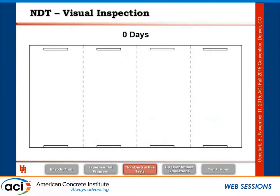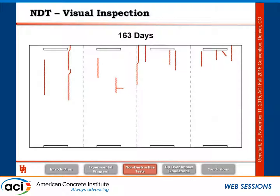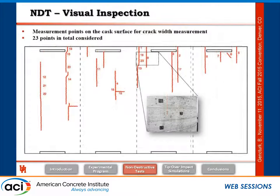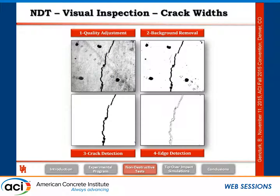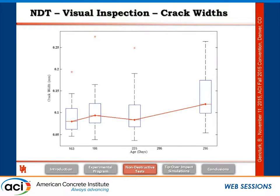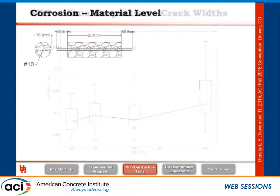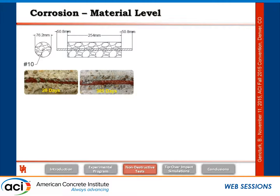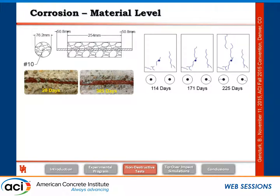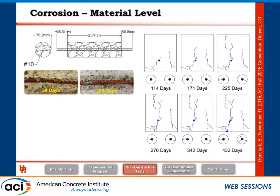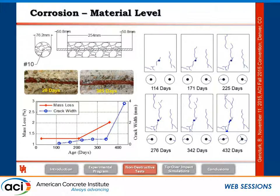We tracked cracks forming on the calcium chloride cask due to corrosion over time — from zero days through 163, 186, 225, 280, and 305 days — with red lines showing crack maps on the cask surface. We also measured crack widths using image processing, showing increasing average crack width and increasing variability over time. Companion material specimens with embedded rebar showed visible corrosion at 28 days and 365 days, with increasing cracks, mass loss, and crack widths confirming significant corrosion activity in this mixture and rebar type.